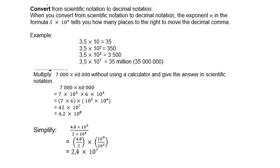Let us convert the following from scientific notation back to decimal notation — we're going to reverse the process. When you convert from scientific notation to decimal notation, the exponent N in the formula S times 10 to the power of N tells you how many places to the right to move the decimal comma.